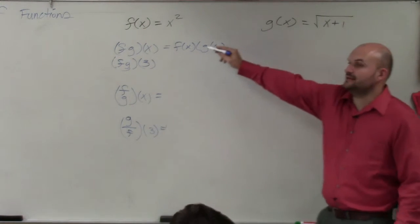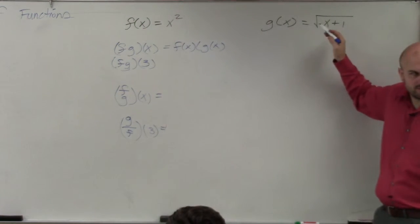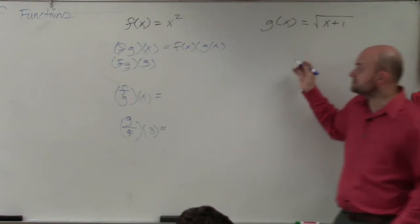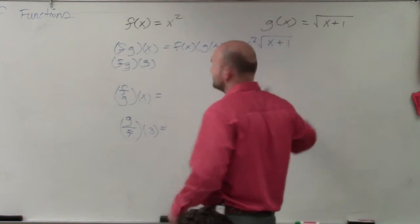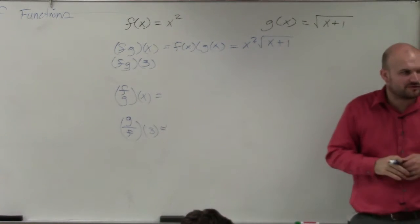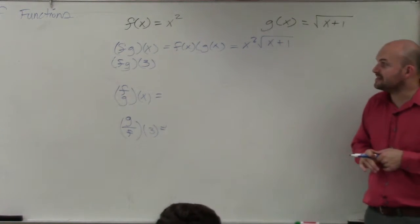So basically, I can't multiply x squared and the square root of x. Those aren't going to be like terms. So it's basically just going to be x squared times the square root of x plus 1. I can't simplify that any further. That just kind of remains the same.